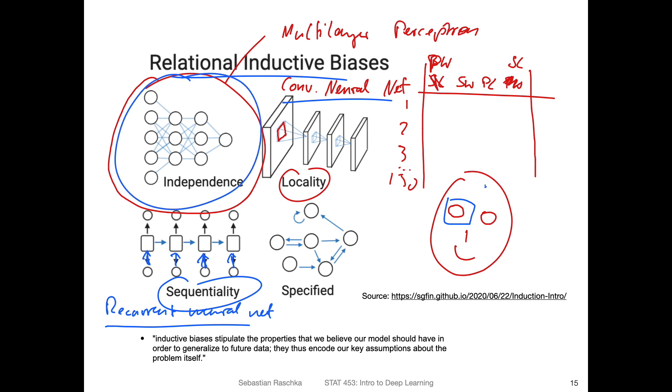Multilayer perceptron doesn't have such an assumption. So in that way, it is very powerful, you can learn a lot of things. I mean, I just briefly mentioned that it can be regarded as a universal function approximator. However, of course, it's also more challenging if you don't have any prior assumptions. So in that way, leveraging these prior assumptions, such as locality or sequentiality, can actually make the learning easier. And that is also one of the key ideas behind deep learning. I will in the next video talk about deep learning, how deep learning evolved from simple multilayer networks.